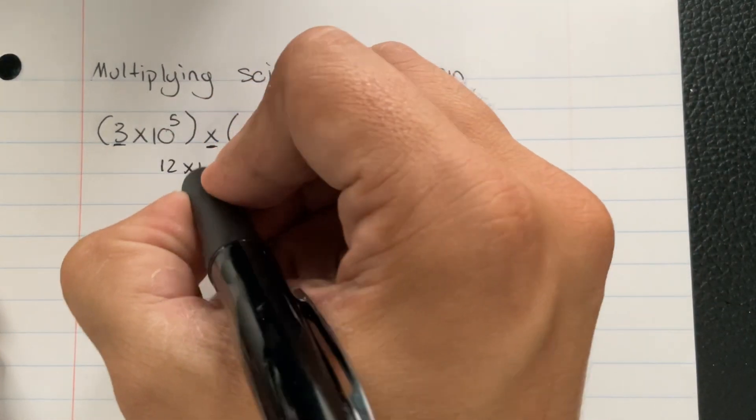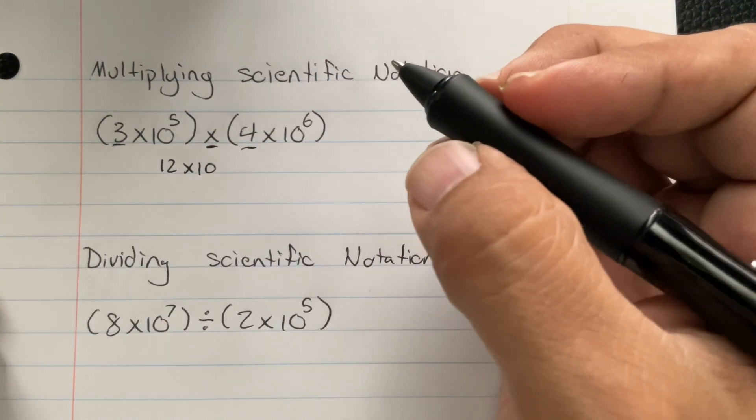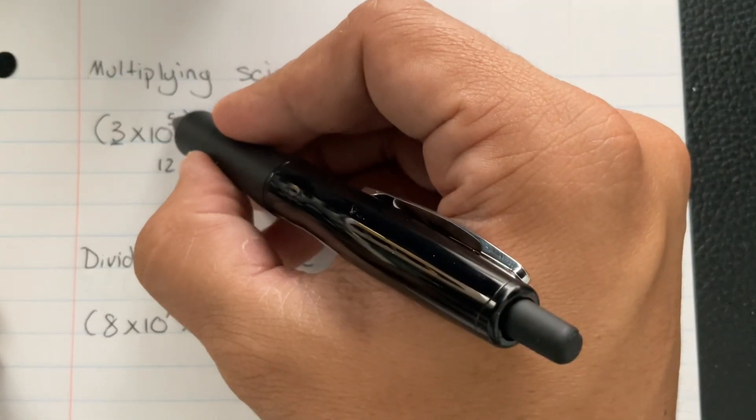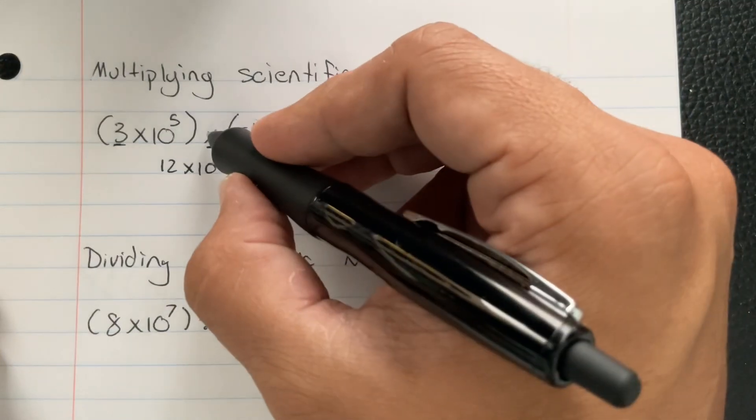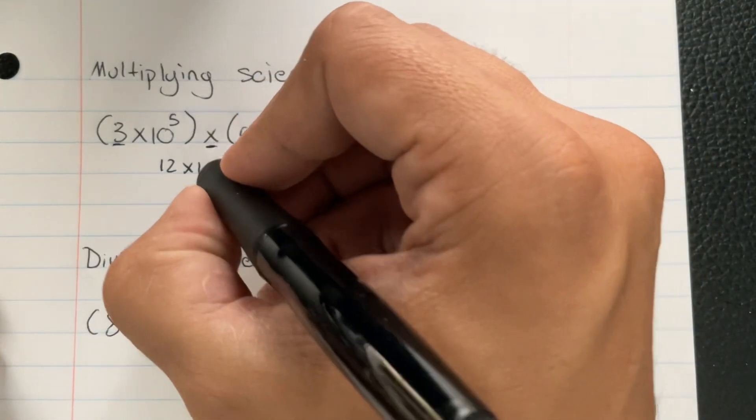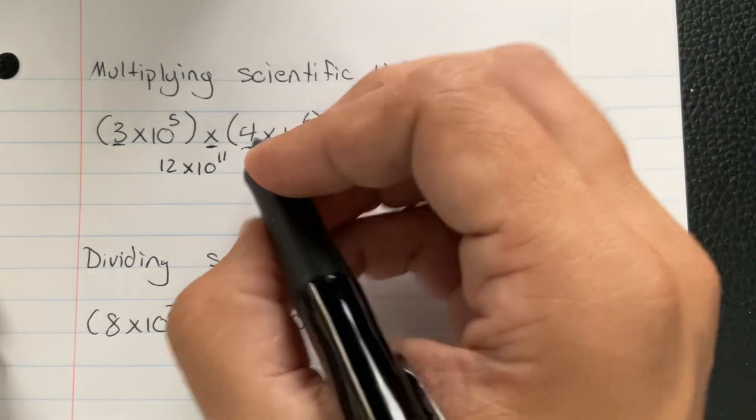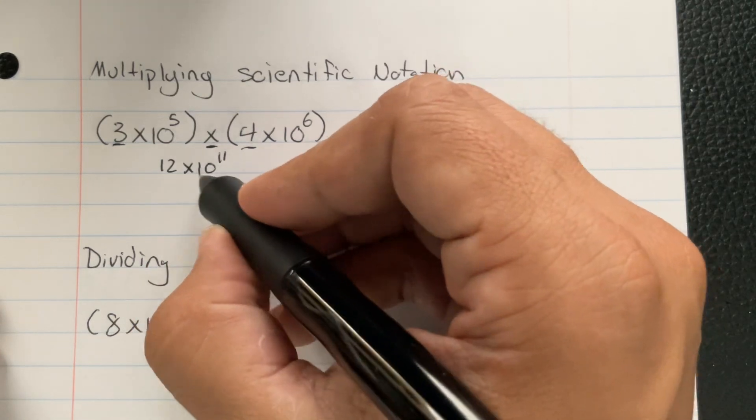We still have to write times 10 because our answer is going to be in scientific notation. And then the exponents, when you multiply, add, which is going to make this 11. So this is kind of a final answer. It's written in scientific notation,